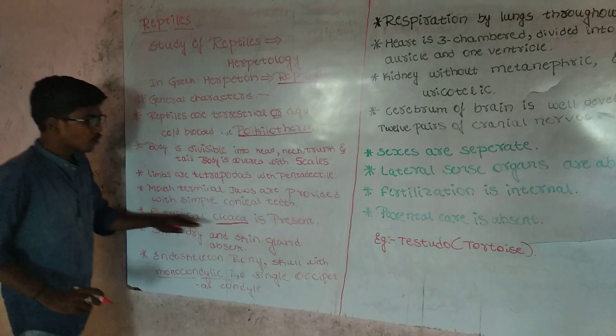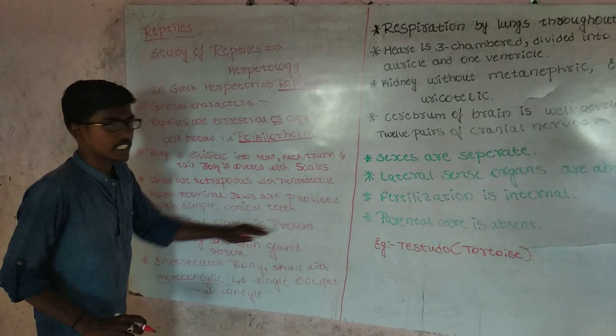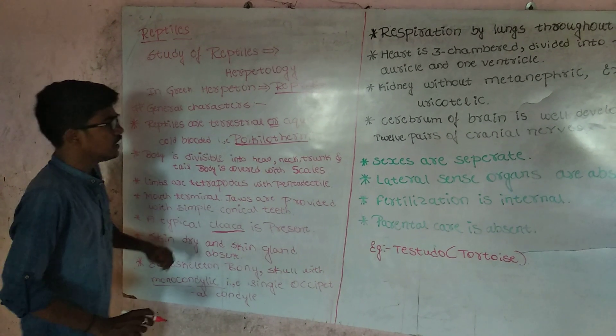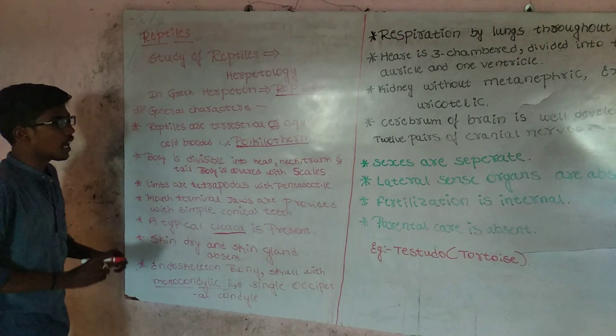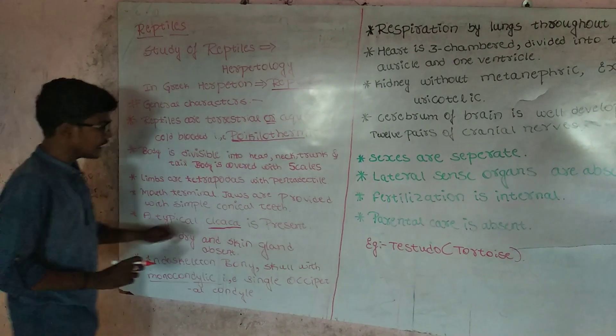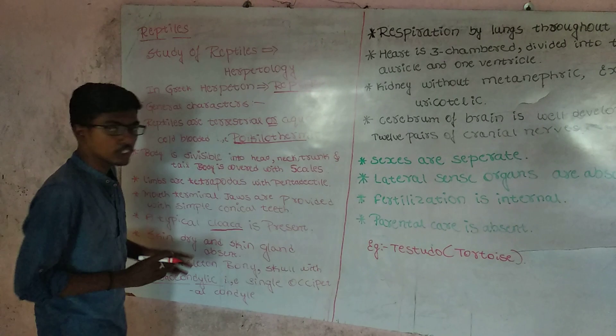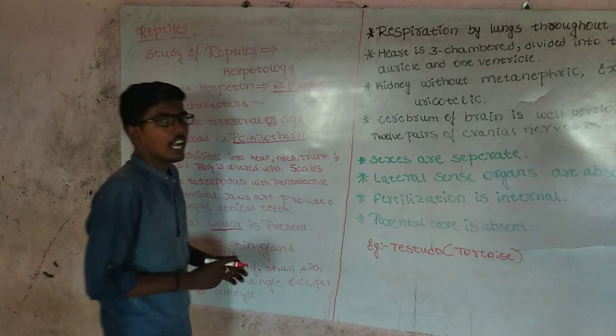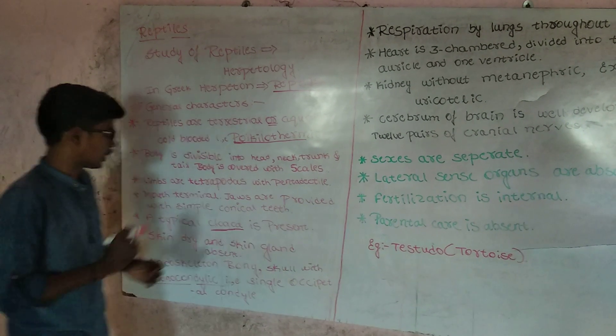A typical cloaca is present. Cloaca is a common opening of the digestive system, excretory system, and reproductive system.